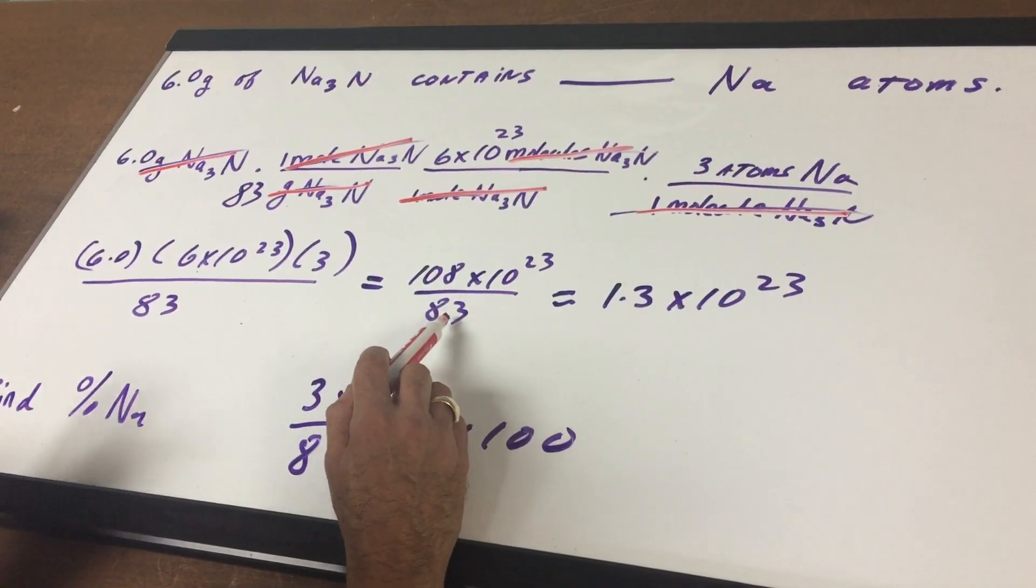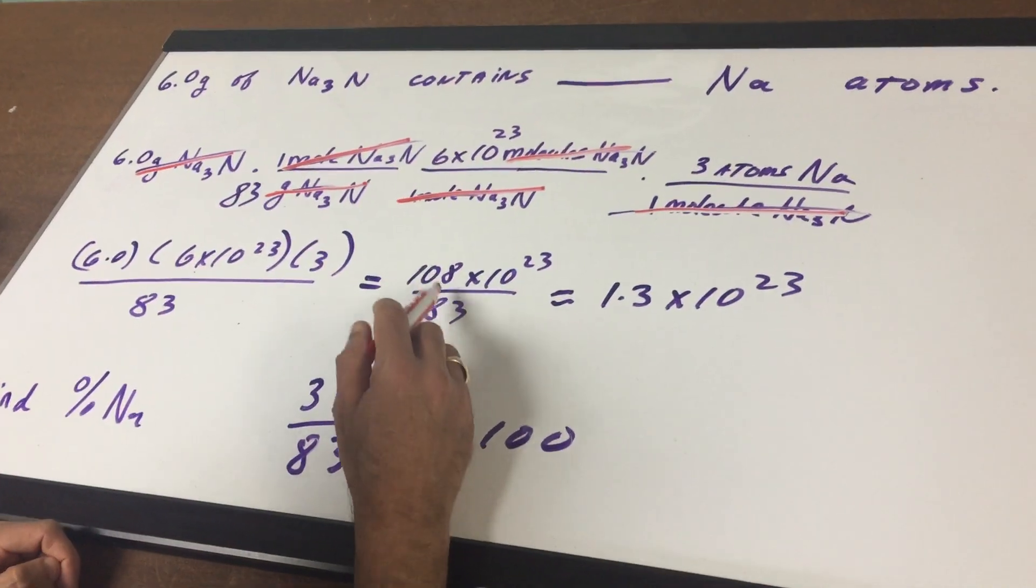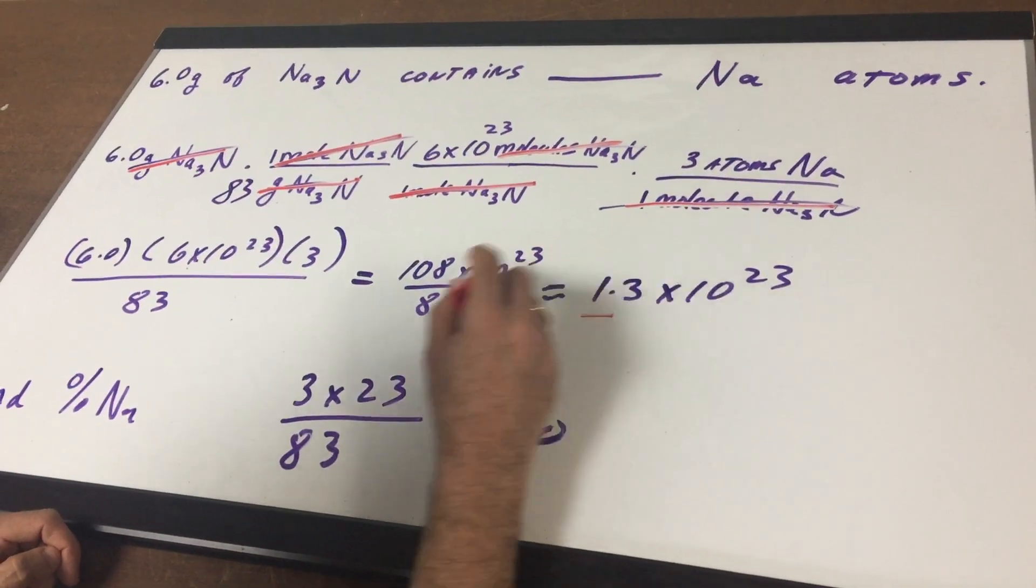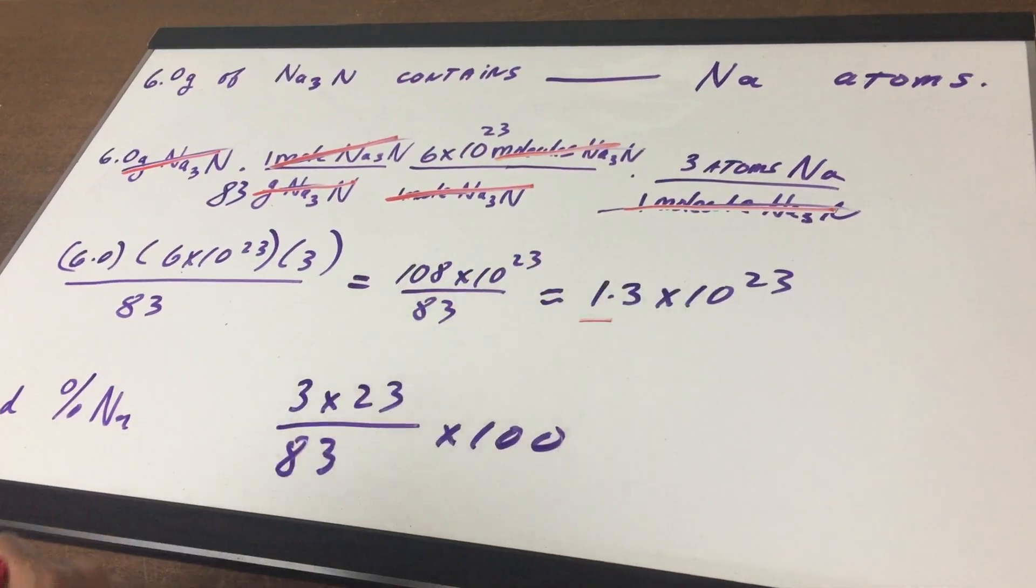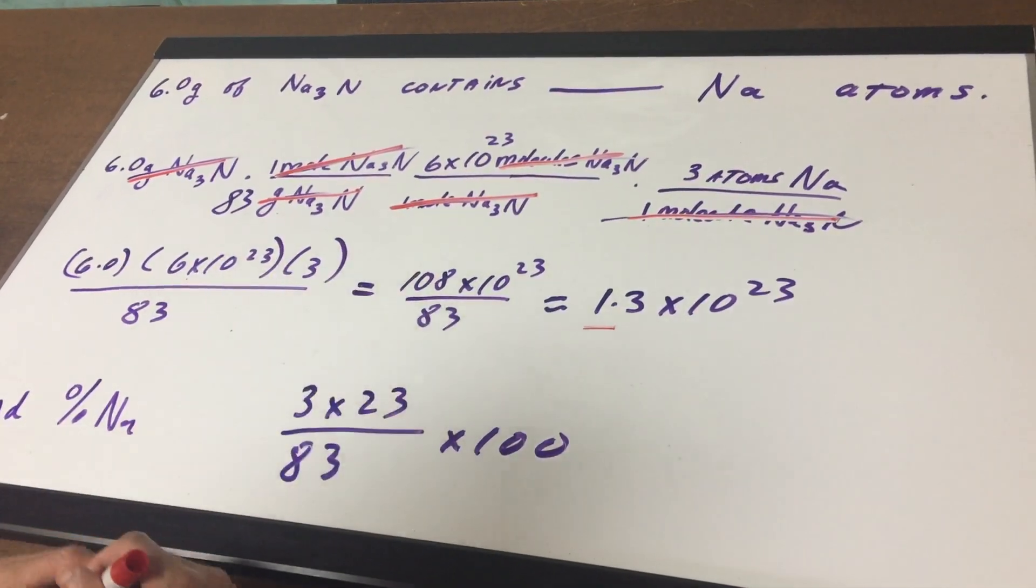108 over 83 is a little more than 1. So it's like 1.3, 1.4, something in there. So I called it 1.3 and there's the 10 to the 23rd. So you should be able to do a question like this and be able to do a good guesstimate.